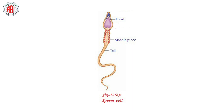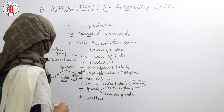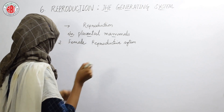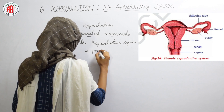Regarding the structure of the sperm cell, it shows three main parts: the head, the middle piece, and the flagellated tail. This structure of the sperm cell helps it to move. In summary, the male reproductive system includes testes, seminal vesicles and ducts, prostate glands, Cowper's glands, and the urethra through which the male reproductive cells pass out of the body.